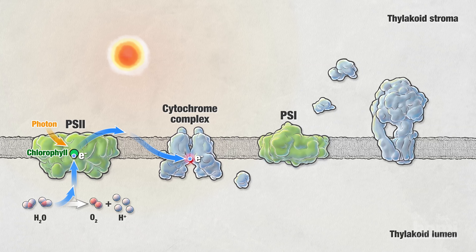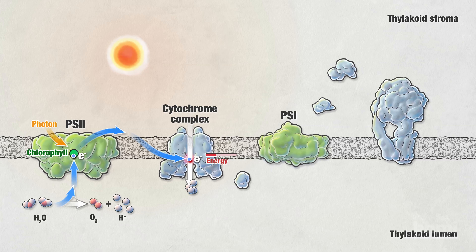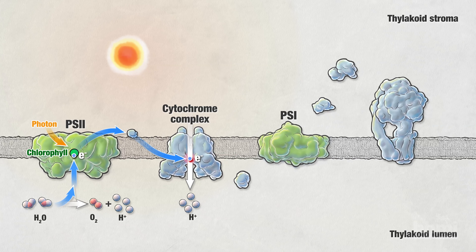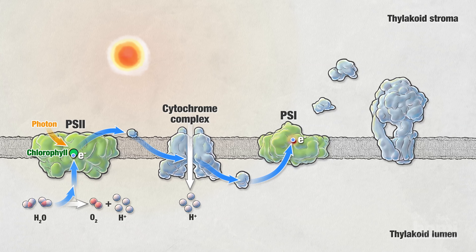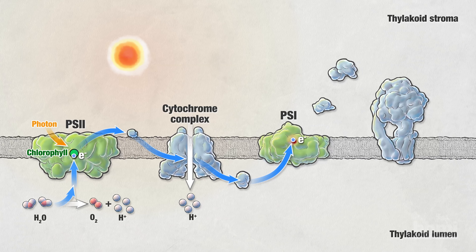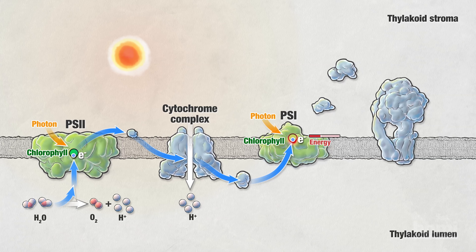First, photons of light hit chlorophyll, a light-absorbing pigment in photosystem II. Electrons in the chlorophyll are excited to a higher energy level. The excited electrons are passed to an electron carrier. Meanwhile, water splits and releases electrons. These electrons replace those lost at photosystem II. The byproduct of this reaction is oxygen, which is eventually released into the air.